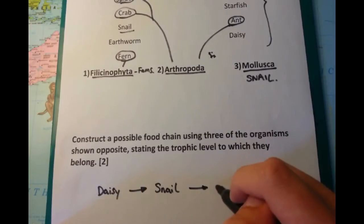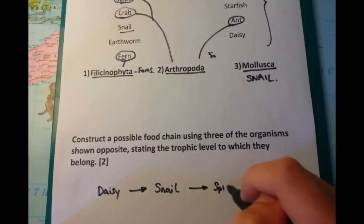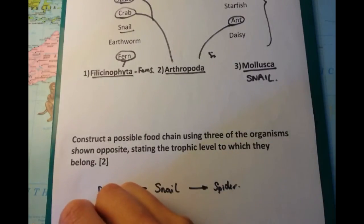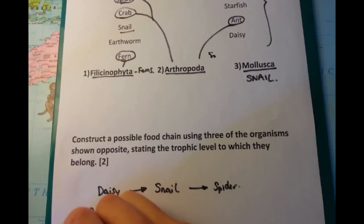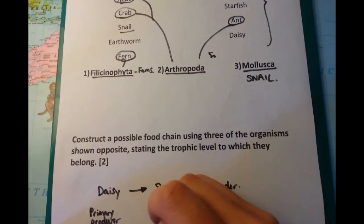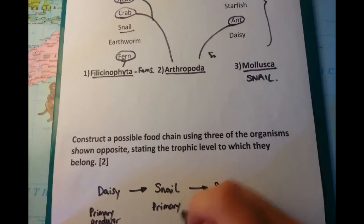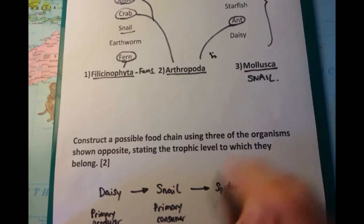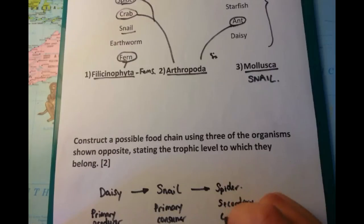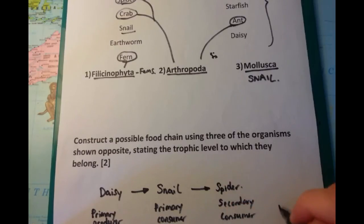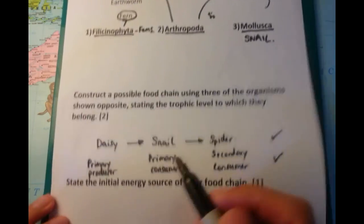Remember that the arrows need to be in the correct order — that will give you one mark. The second mark is where you state the trophic level to which each organism belongs. The daisy starts as a producer or an autotroph, whereas the snail and spider are primary and secondary consumers respectively. That will give you the second mark, as long as you put that down.